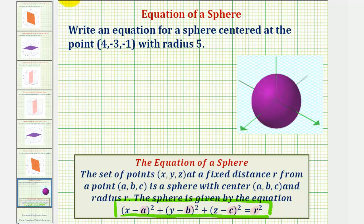Since we're given the center, we know that a equals 4, b equals -3, and c equals -1. We also know r equals 5.